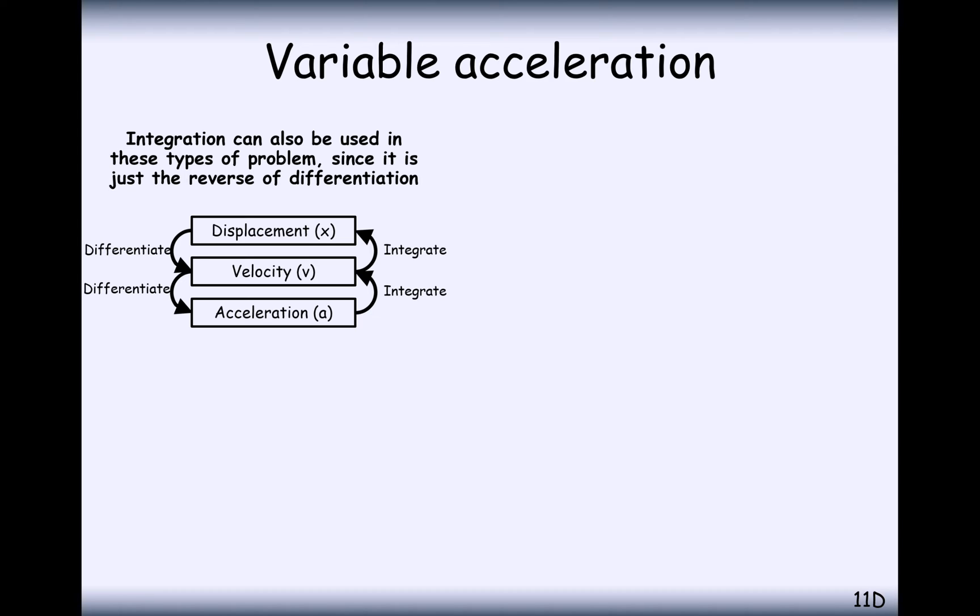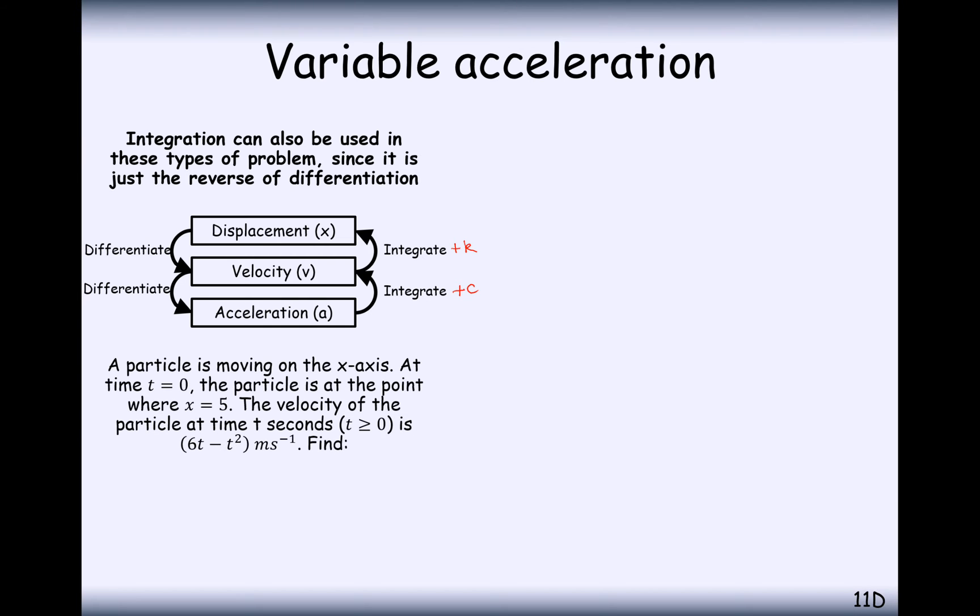The only thing that's a bit of a snag in this process is that there's always going to be a plus c when we go from one step to the other. So maybe use different letters here. Plus c for the first part of your integration. And then if it gets in the way later on, then use a plus k just to distinguish between your integration constants.